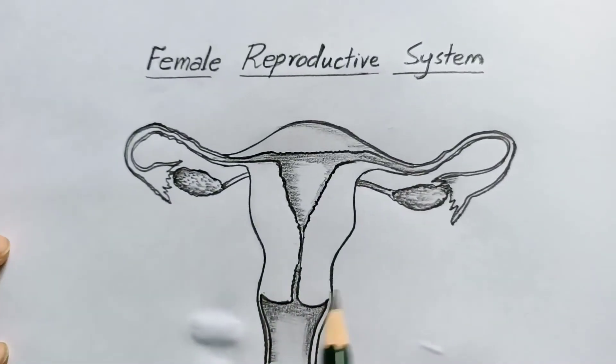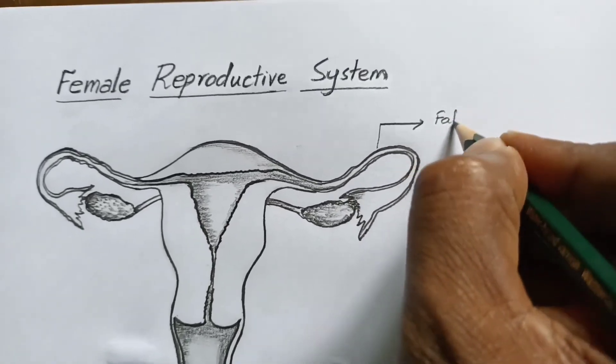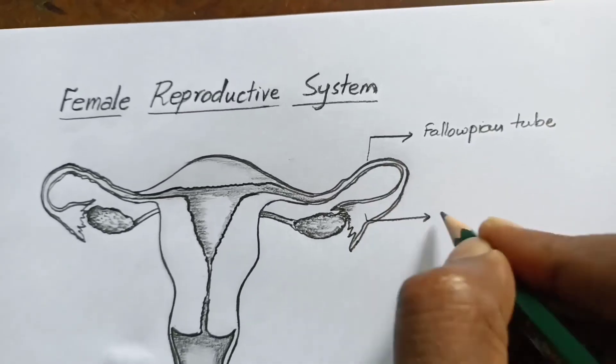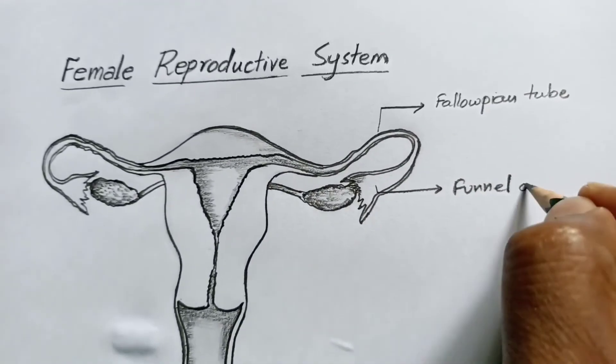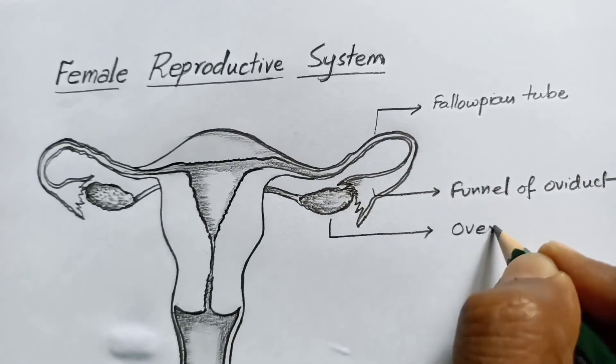Hope you understood how to draw the structure. These are fallopian tubes, also known as oviducts. This is the funnel of the oviduct. This is the ovary.